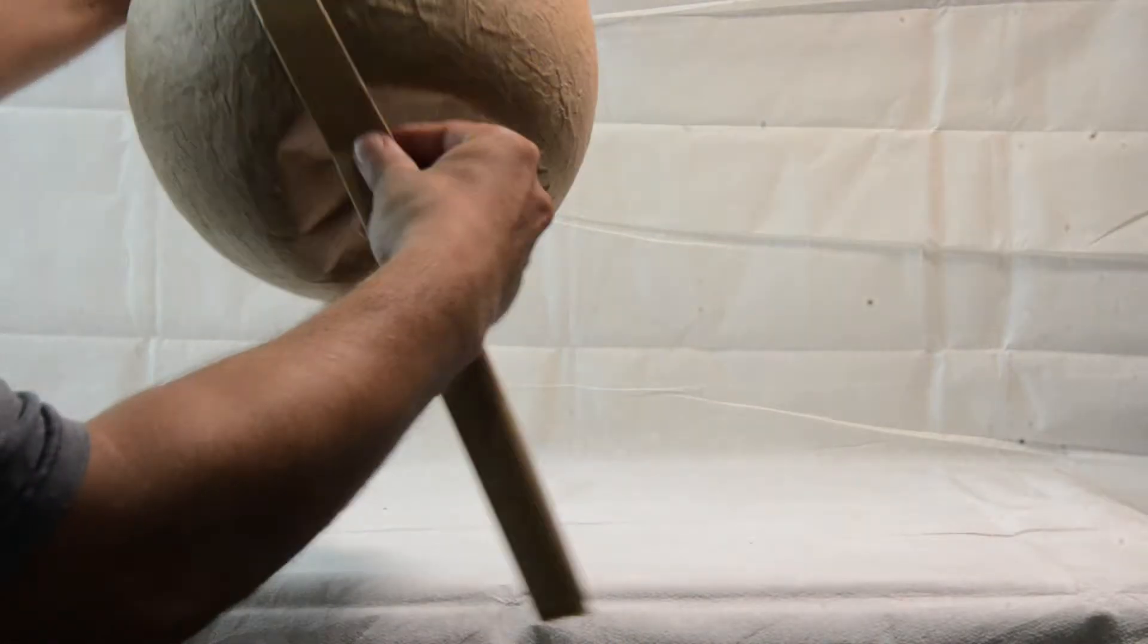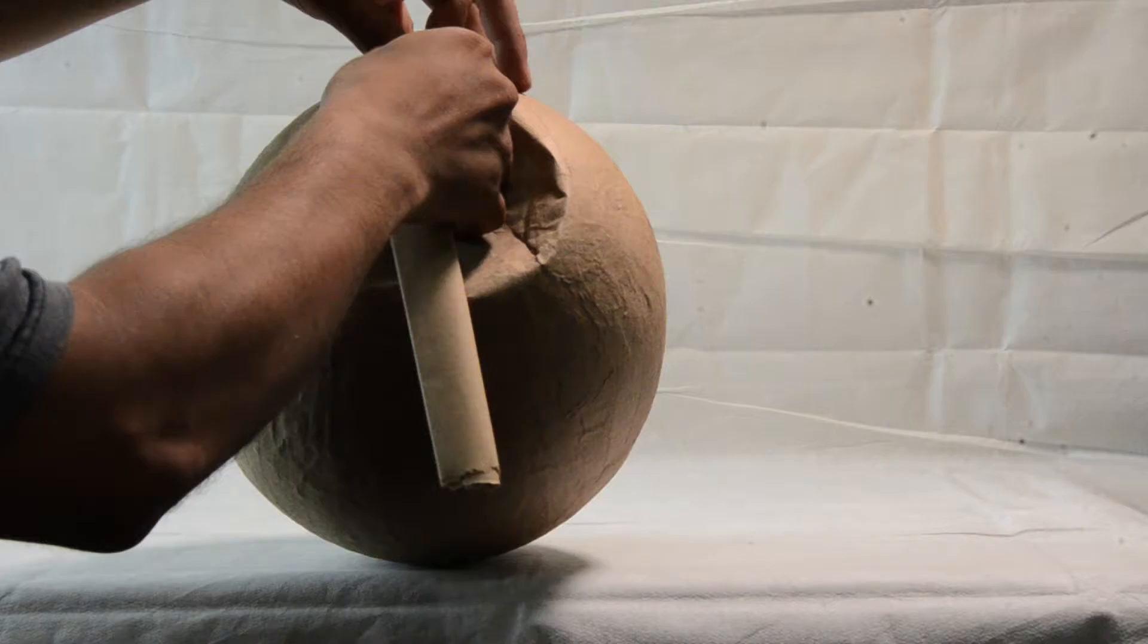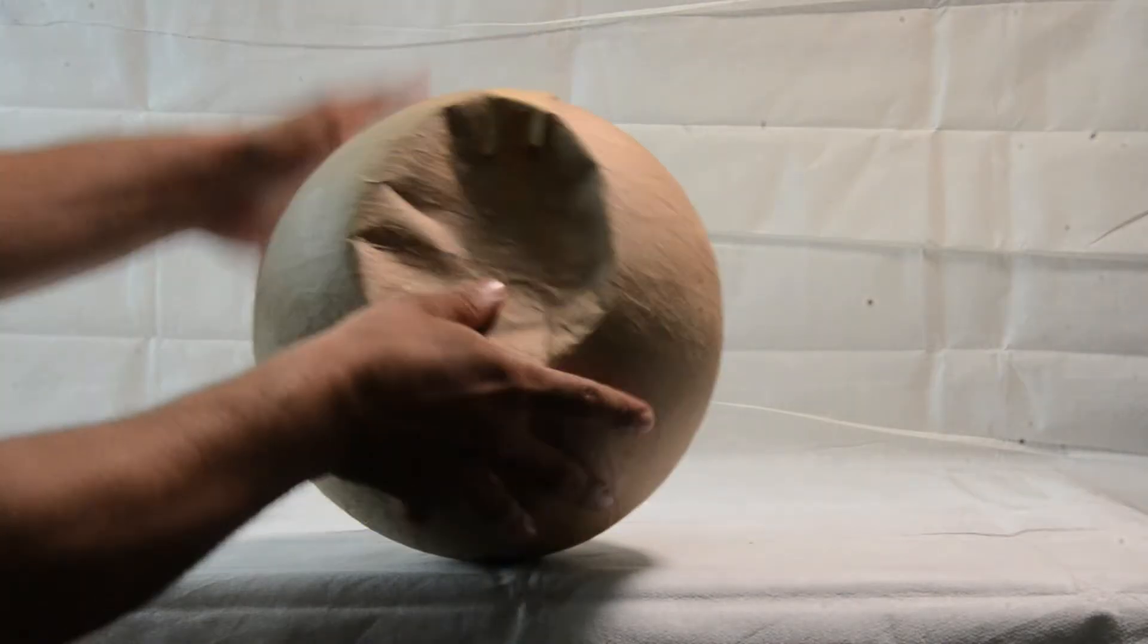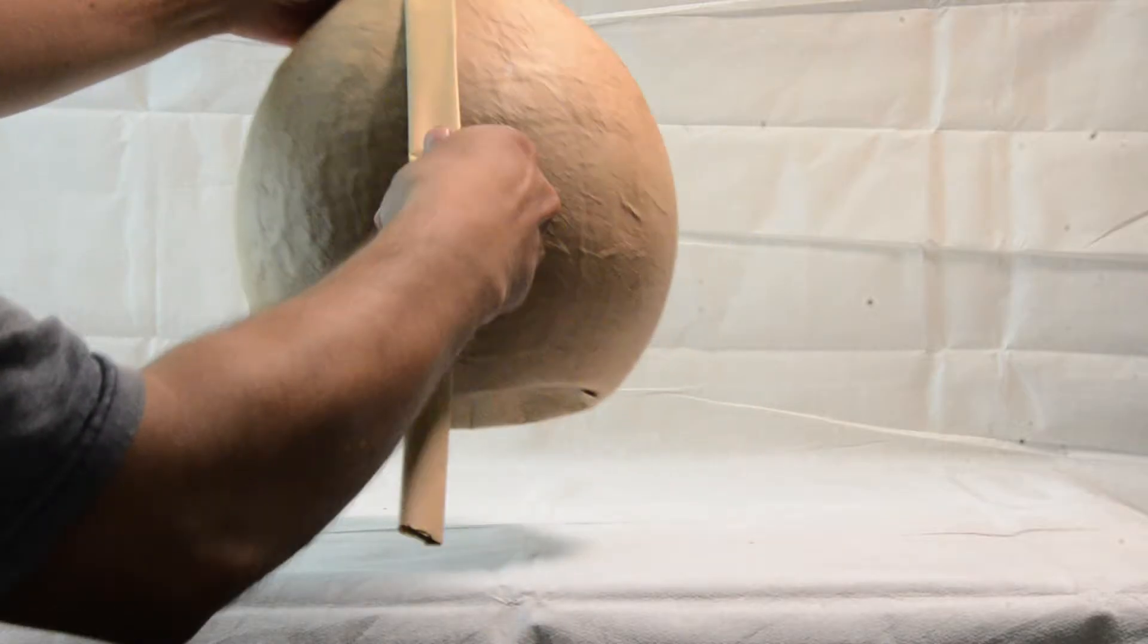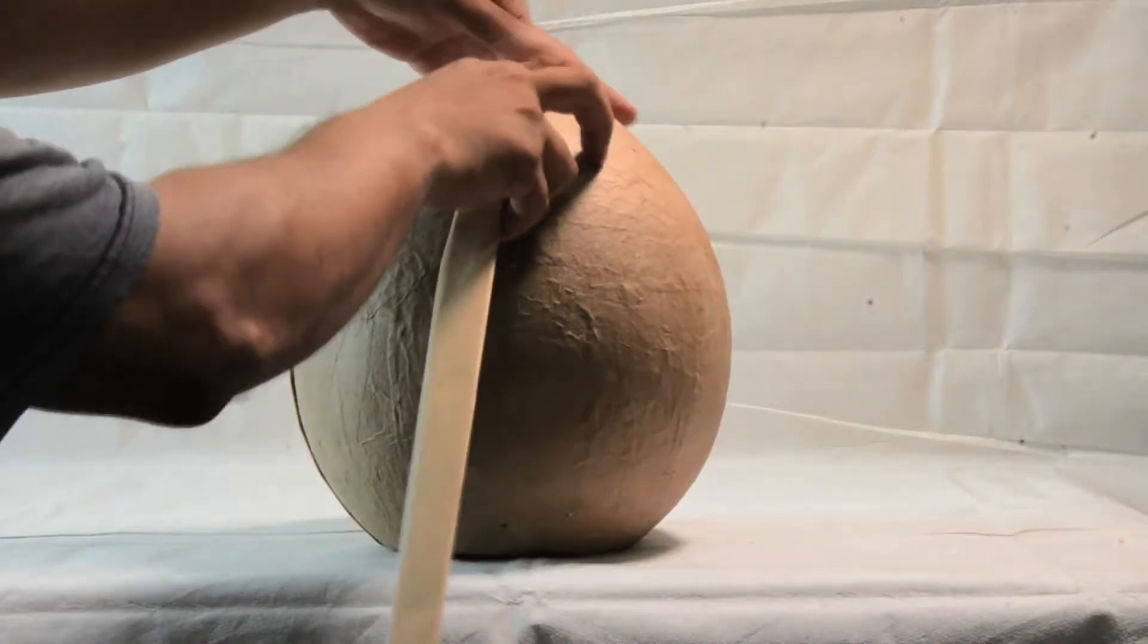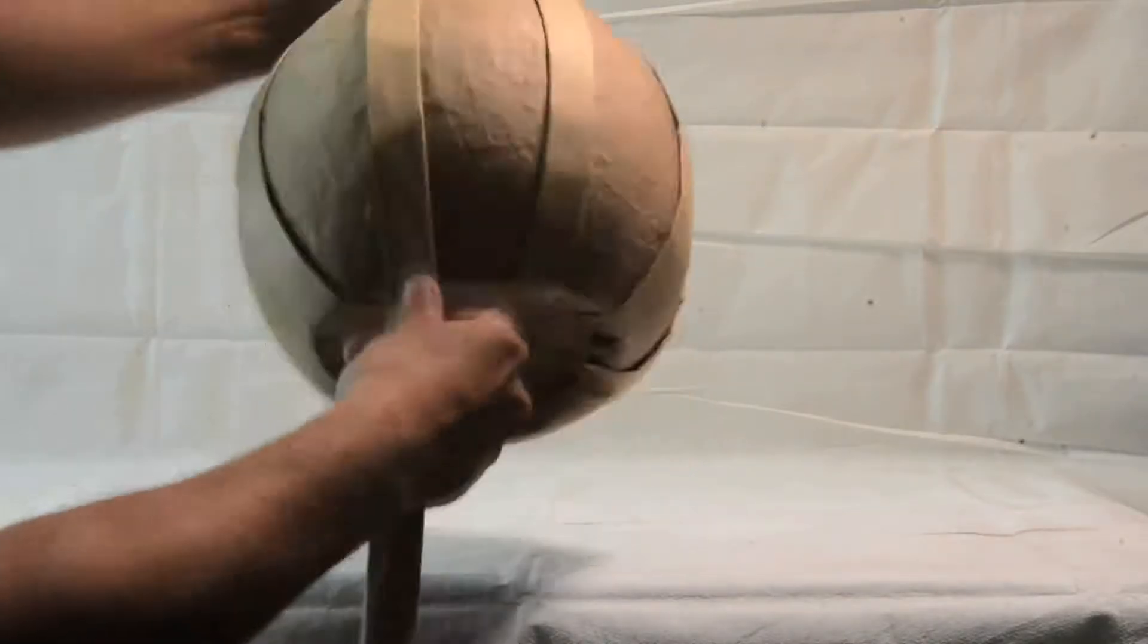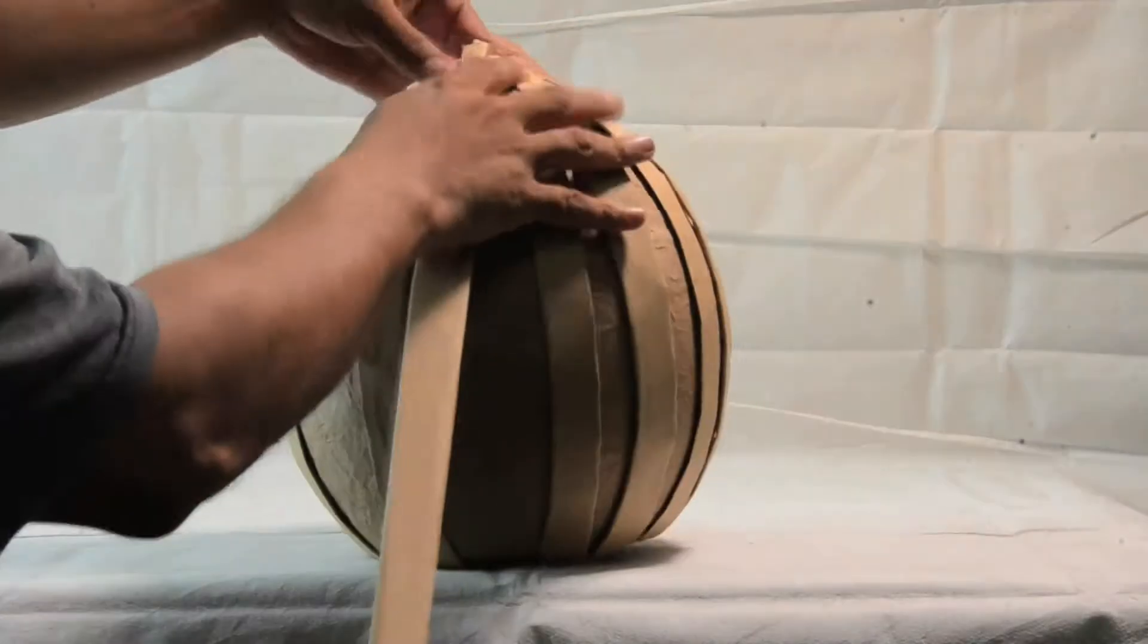Next we're going to start taping it to the balloon. If you have any extra length just cut it off. Repeat this step depending on the amount of ridges that you want on your pumpkin.